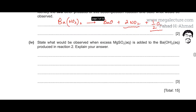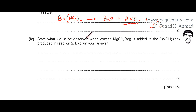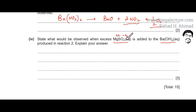Part 4 asks what would be observed when excess magnesium sulfate is added to aqueous barium hydroxide from reaction 2. This is an example of ionic precipitation. When MgSO4 is dissolved in water, it dissociates into Mg²⁺ ions and SO4²⁻ ions scattered randomly in solution.